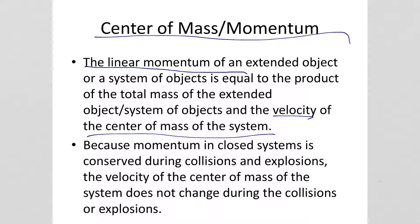Because momentum in a closed system is conserved during collisions and explosions, the velocity of the center of mass of the system doesn't change after the collision or explosion — it remains constant, the same as it was before. On pretty much every AP Physics 1 exam over the last couple of years, there's been a problem requiring you to know that the velocity of the center of mass of a closed system or extended object doesn't change after the collision. Momentum is conserved.